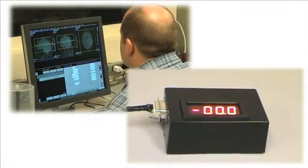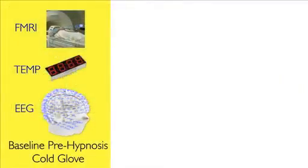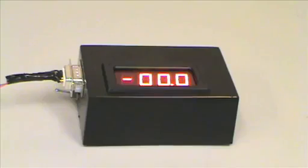We first collect concurrent EEG fMRI data and hand temperature measurements while subjects listen to an audio tape via MR-compatible headphones that instructs them to imagine that their left hand is growing colder, otherwise known as the Cold Glove paradigm.